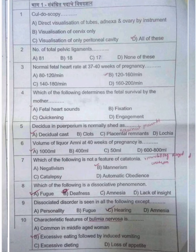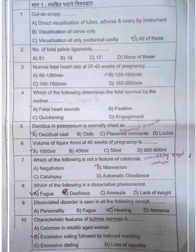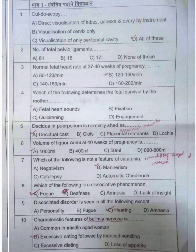Seventh question: which of the following is NOT a feature of catatonia? Catatonia includes mannerism, negativism, and catalepsy. But automatic obedience is not a feature of catatonia — so that is the correct answer. Eighth and ninth questions are about dissociative phenomena and dissociative disorders. Amnesia, fugue, and personality disorder are all dissociative disorders, but hearing impairment is a separate anatomical disorder and does not belong to this category.